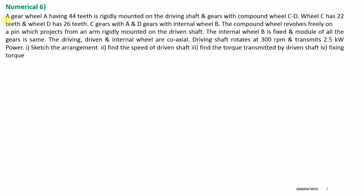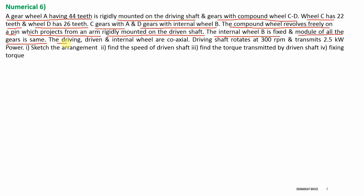Here is the problem statement. A gear wheel A having 44 teeth is rigidly mounted on the driving shaft and it gears with compound wheel CD. Wheel C has 22 teeth and wheel D has 26 teeth. C gears with A and D gears with internal wheel B. The compound wheel revolves freely on a pin which projects from an arm rigidly mounted on the driven shaft. The internal wheel B is fixed and the module of all gears is the same. The driving, driven, and internal wheel are coaxial.